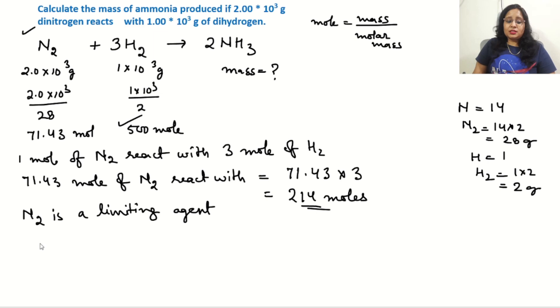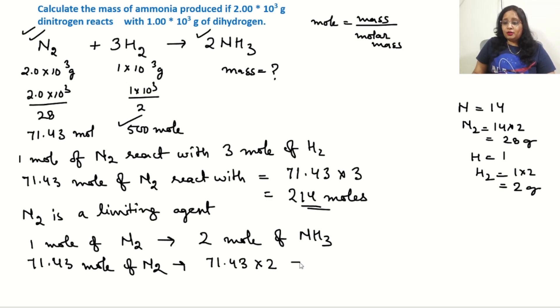Now we calculate ammonia production. From the equation, 1 mole of nitrogen gives 2 moles of ammonia. So 71.43 moles of nitrogen will give 71.43 × 2 = 142.86 moles of ammonia.